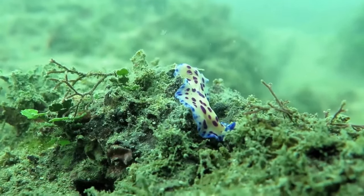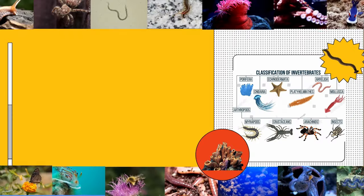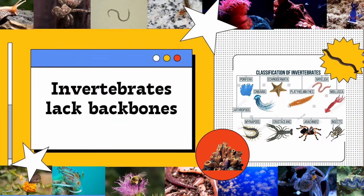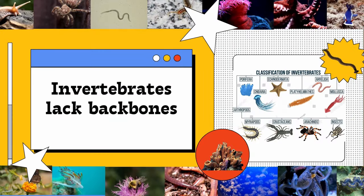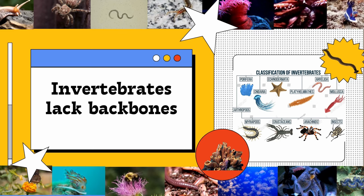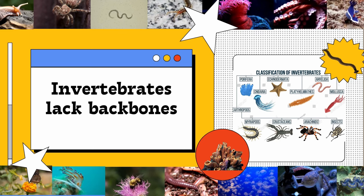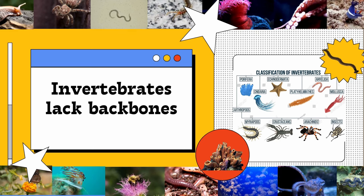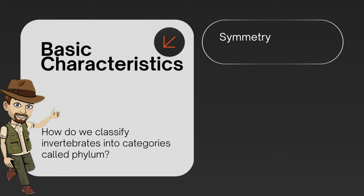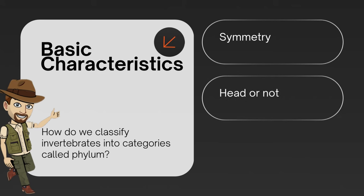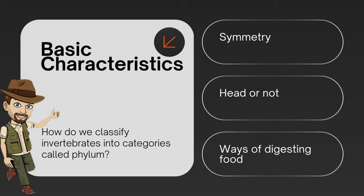First, what exactly is an invertebrate? Well, invertebrates are animals in the kingdom Animalia that lack a vertebral column or backbone. Some of the characteristics that help us put invertebrates into categories called a phylum are the animal's body plan or symmetry, if the animal has a head or not, and the way it digests its food.